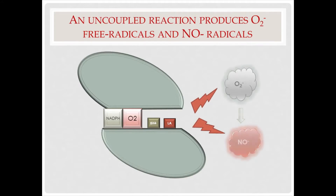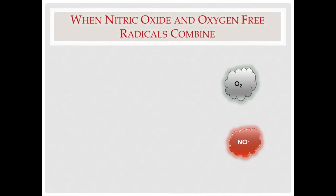Because the enzyme is only partially joined, electrons cannot transfer between the two parts of the enzyme smoothly, as they could in the coupled reaction, and cannot create nitric oxide in proper amounts. Instead, a smaller amount of nitric oxide is created, and oxygen-free radicals that can cause damage in the body are produced.